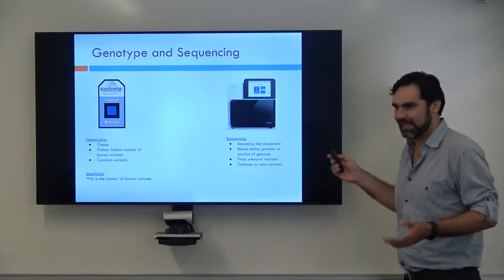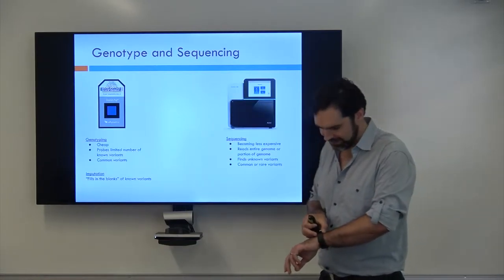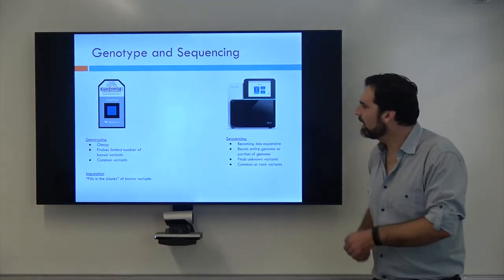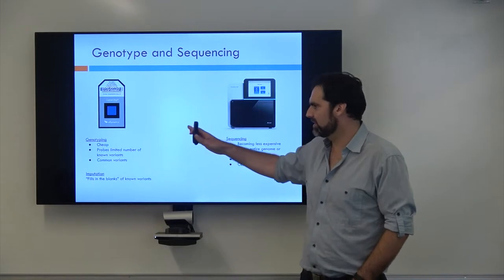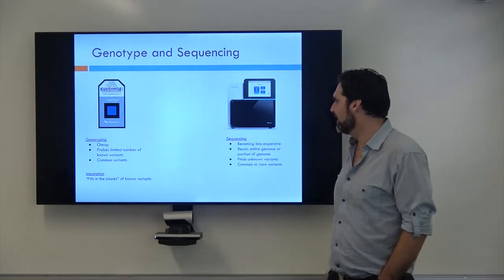All right, so we have all these variants, right? But how do we actually find out what these variants are? There are kind of two technologies you'll have referred to. One is called genotyping with a gene chip and the other is sequencing.